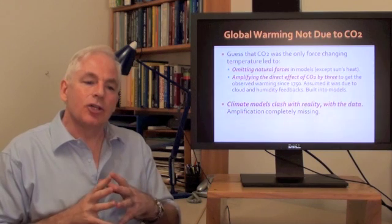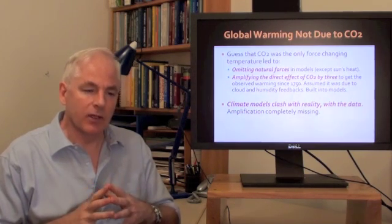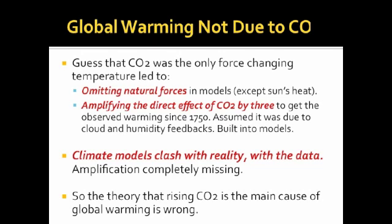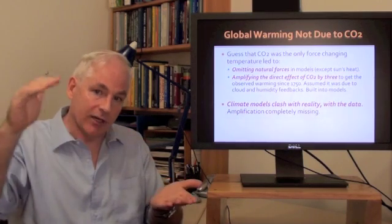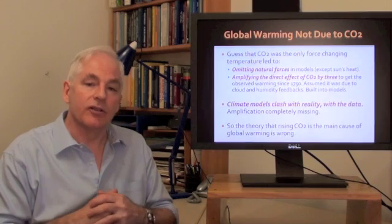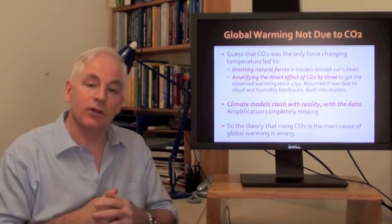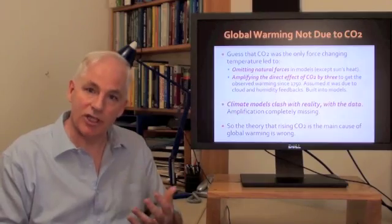So the guess that CO2 is the only forcing change in temperature has led to two aspects of the climate models. First of all, it meant that we omitted natural forces in the models, except for the sun, which has stayed pretty constant. Secondly, it meant that we had to introduce this amplifying factor of 3 to get the climate models to explain the temperature rise since 1750. But the climate models clash with reality — they clash with the data. The amplification isn't there, so something is very wrong. The theory that rising CO2 is the main cause of the global warming we've seen in the last century is wrong. There must be something else causing the warming, because CO2 can't account for it.